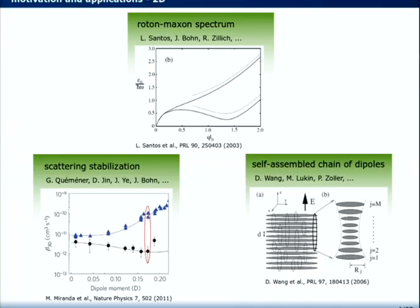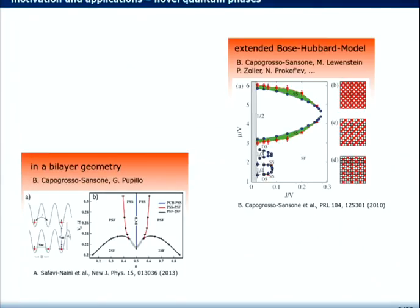There you have a momentum-dependent excitation. Of course, if you have a pancake-like trap, for low momentum, you only have repulsive collisions, but for higher momentum, you will also have attractive collisions, and this makes this minimum in the excitation spectrum. Another proposal is to observe self-assembled chains of dipoles. Because of the long-range dipole-dipole interaction, you will have interactions between different lattice sites, and this very long chains can appear.